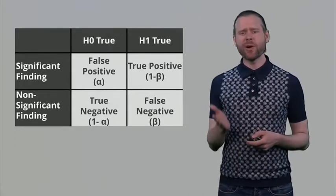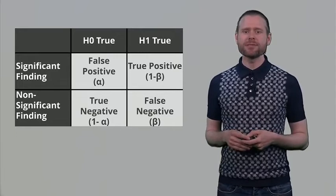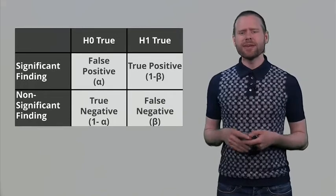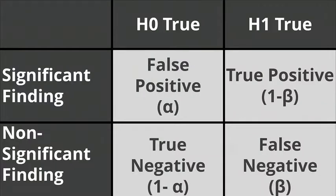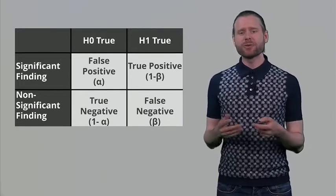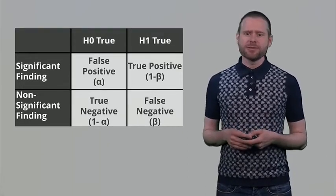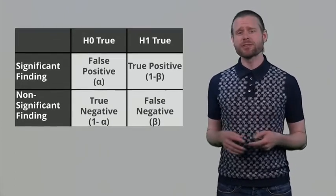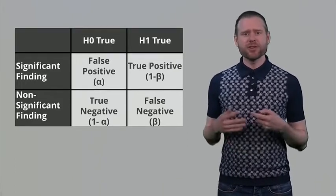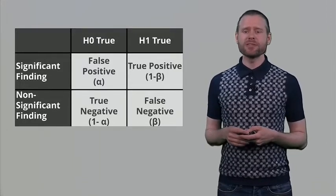Because we have these two situations where the null hypothesis is true or the alternative hypothesis is true, and you can either observe a significant effect or you will find a non-significant result, we can divide these options into four cells. When the null hypothesis is true and you find a significant effect, you made a false positive — a type 1 error. You said there is something here when there is actually nothing. When the null hypothesis is true you can also correctly say that there is no true effect, which we call a true negative. When the alternative hypothesis is true and you find a significant effect, that is a true positive. You can also draw the conclusion that there is nothing going on when there is actually a true effect, and we call this a false negative.